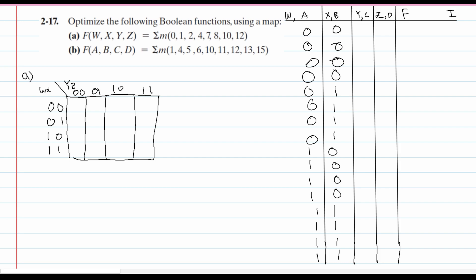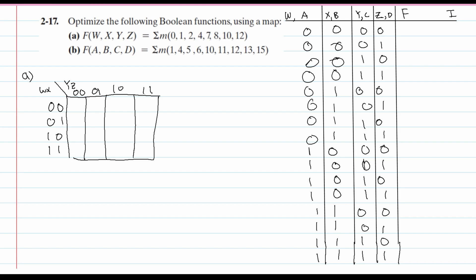We're going to look at our C and D columns. We're just going to go through it: 00, 01, 10, 11, and then repeat this entire way down for all of them. And so this is what our truth table is going to look like.